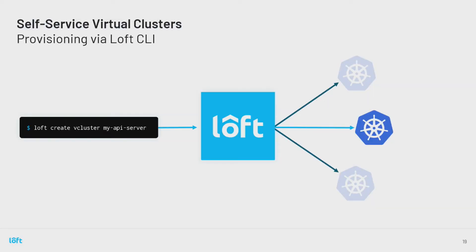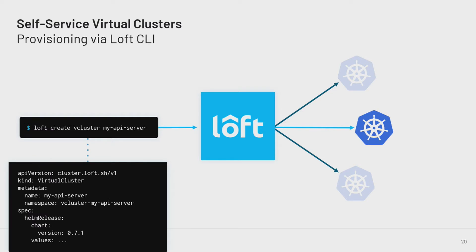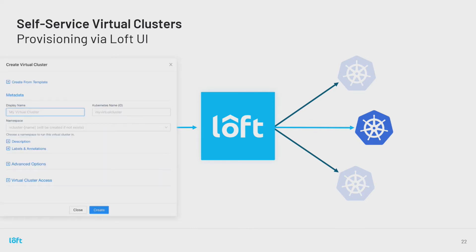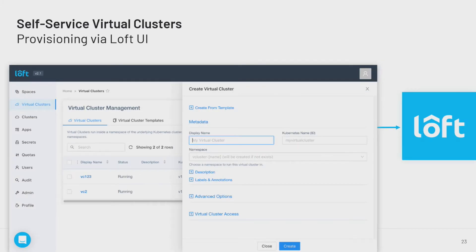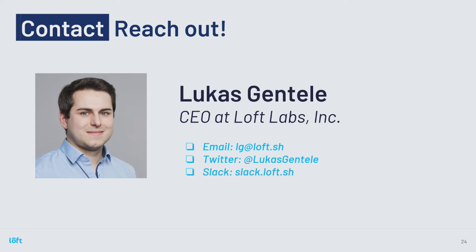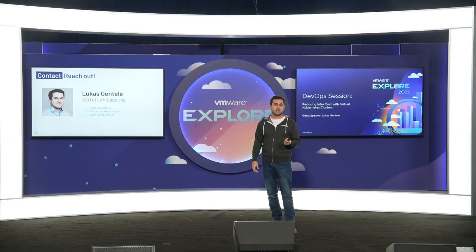Why is vCluster so popular? vCluster and Loft make it super easy for engineers or companies to create a self-service experience — it's as easy as running a single CLI command. There is a CRD under the hood, and you can also operate Loft entirely with kubectl. We have a UI that makes it easy to see which virtual clusters you have and their state. If you're interested, you can find us on GitHub, reach out via email. We have a Slack channel with over 700 users — we started vCluster last year and it already has over 12 million Docker pulls, meaning over 12 million virtual clusters created. Thank you.